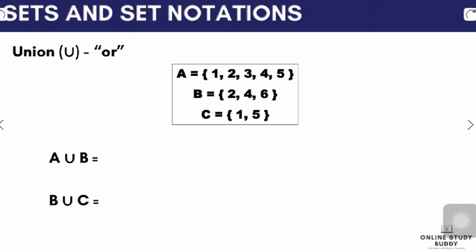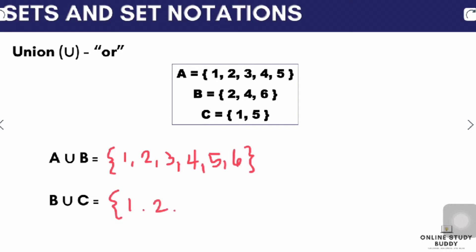Next is union. A union of two sets is defined as a set that contains the elements of set A or set B. We need to list down all of the elements that are present in the specified sets. So for A union B, the elements are 1, 2, 3, 4, 5, and 6. And B union C is 1, 2, 4, 5, and 6. The symbol used to denote union is the letter U.